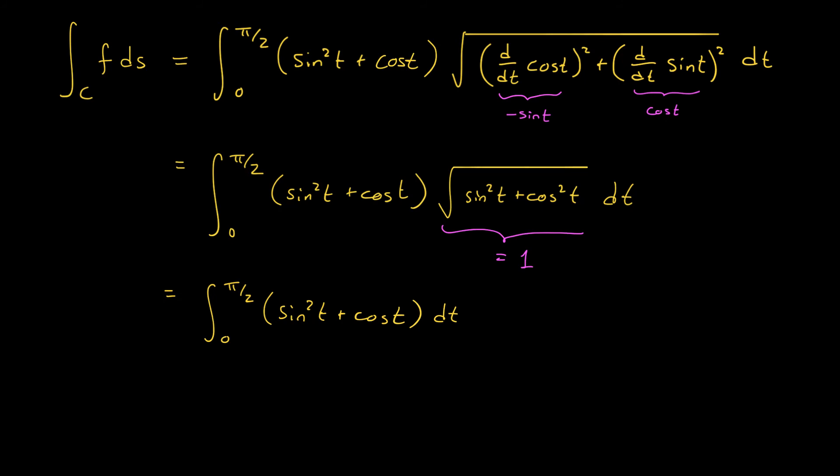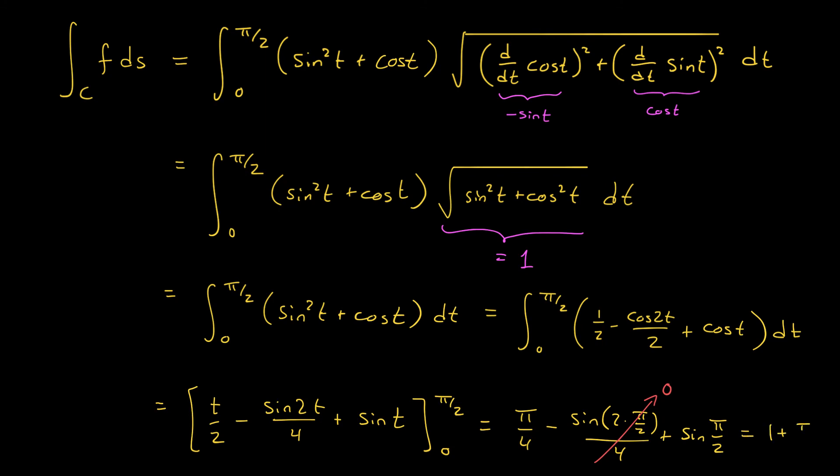I'm now going to use a trig identity to handle this sin^2 term. I'm going to write this as (1 - cos(2t))/2. So I have the integral from 0 to π/2 of (1/2 - cos(2t)/2 + cos(t)) dt. At this point, I'm ready to take my antiderivative. I have t/2 - sin(2t)/4 + sin(t) all evaluated between 0 and π/2. Now notice that if I were to plug in 0, everything would disappear here. So I'm really only going to worry about the upper bound. I get π/4 - sin(2·π/2)/4 + sin(π/2). And at this point, I can realize that, well, sin(2·π/2) is going to give me sin(π), which is 0, and sin(π/2) will give me 1. So I have a final answer of 1 + π/4.